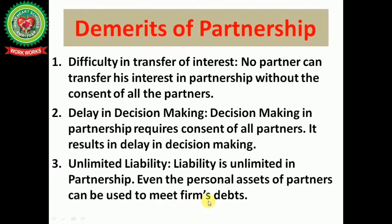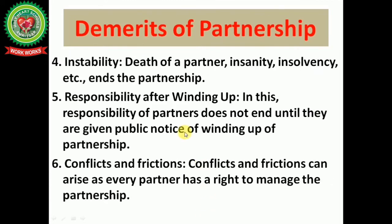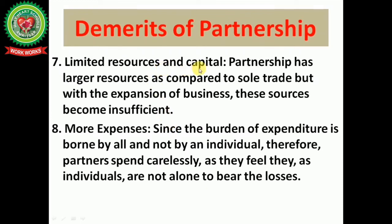Next is instability — death, insanity, or insolvency of a partner ends the partnership. Next is responsibility after winding up — the responsibility of partners does not end until a public notice of winding up is given. Next is conflicts and frictions — disputes can arise because every partner has a right to manage the partnership.